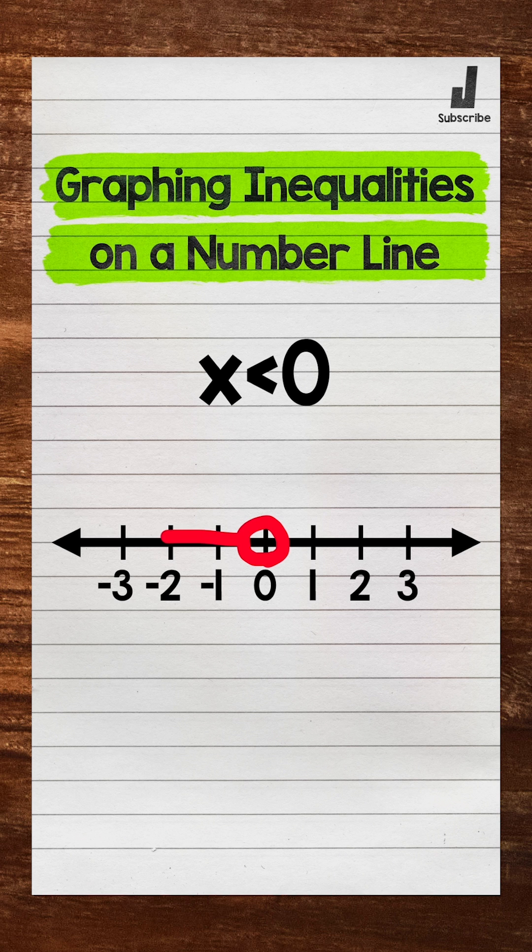So we need an arrow pointing to the left, the direction of all of the numbers less than 0. And this now represents, this now shows, x is less than 0.